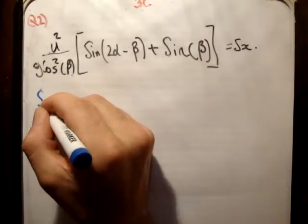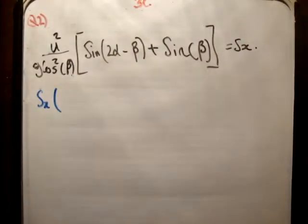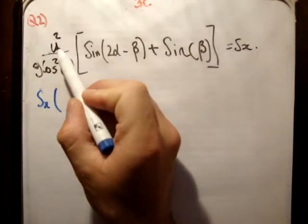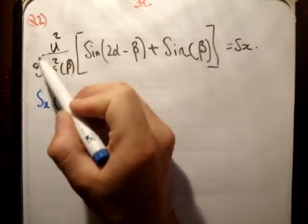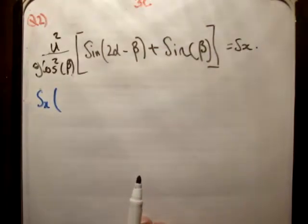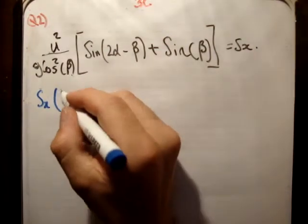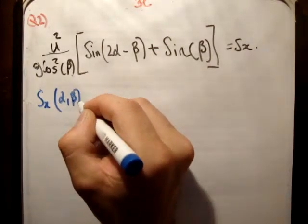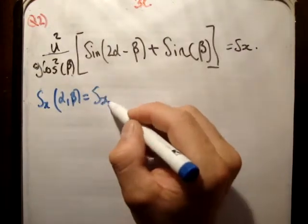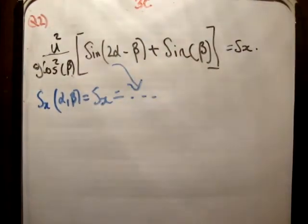Now, if you look at those videos, you will know the following. That S sub X, the function that we have here, is a function of the following variables. Well, U is a constant, the initial speed is a constant, and gravity is a constant. So the only variables in this expression are alpha and beta is equal to S sub X is equal to whatever is up here, the whole thing, right? So it's a function of alpha and beta.